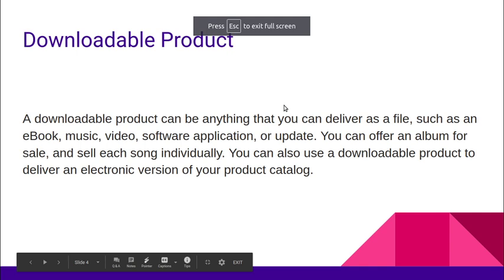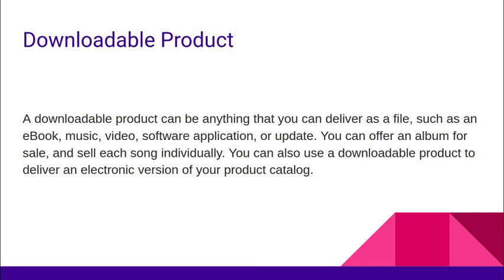Next is the downloadable product. Downloadable products are simple to understand — they are products you can deliver as a file, such as e-music, ebooks, music, video, software applications, or updates. You can offer an album for sale and sell each song individually, or use a downloadable product to deliver an electronic version of your product catalog.